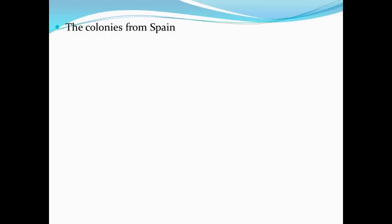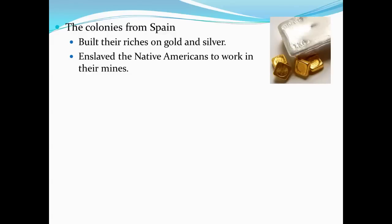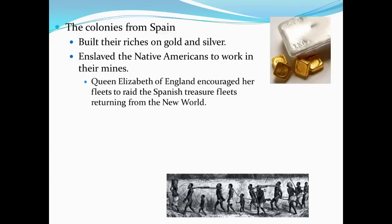The colonies from Spain built their riches primarily on gold and silver. They established many mines and enslaved the Native American people to work in these mines. The gold and silver was then sent on ship back to Spain. The rivalry between Spain and England spread to the seas when Queen Elizabeth of England ordered her fleet of ships to raid the Spanish treasure fleets returning from America.